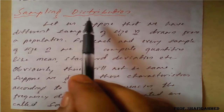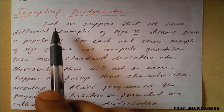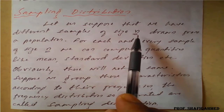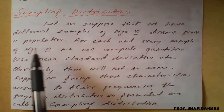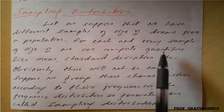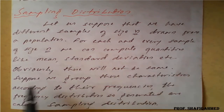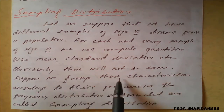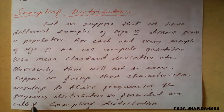Today we'll see one more concept: sampling distribution. Let us suppose that we have different samples of size n drawn from a population. For each and every sample of size n, we can compute quantities like mean, standard deviation, etc. Obviously these will not be the same.